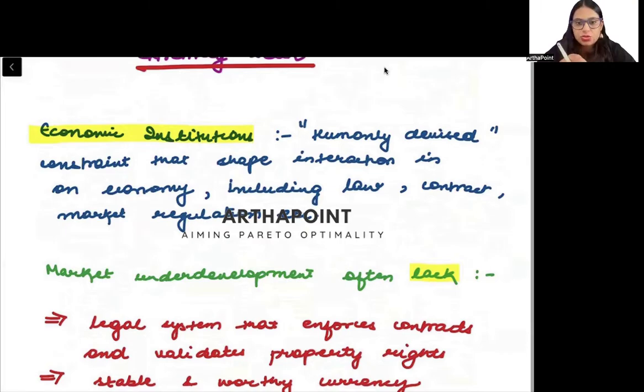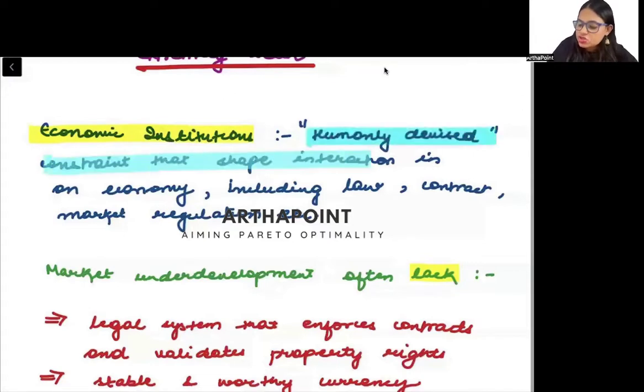What is the work of these institutions? To shape the correct interaction so that people treat each other properly. So economic institutions are humanly devised constraints that shape interaction in the economy.